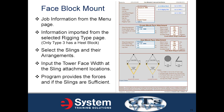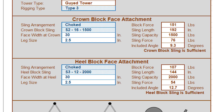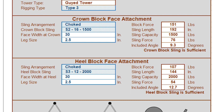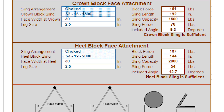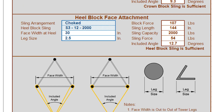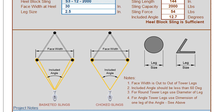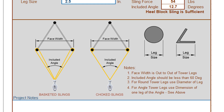The job information from the menu page automatically populates this page, as it does all other pages. Information is imported from the selected rigging type page, then you select the slings and their arrangements. You input the tower face width at the sling attachment locations, and the program provides the forces and tells you if the slings are sufficient.